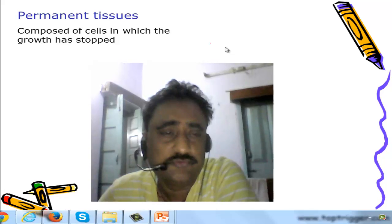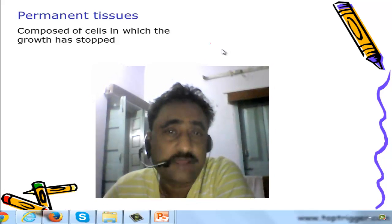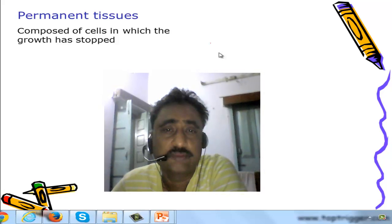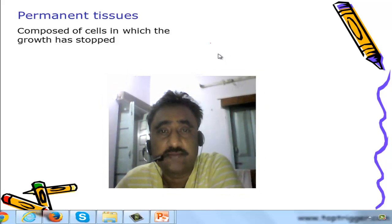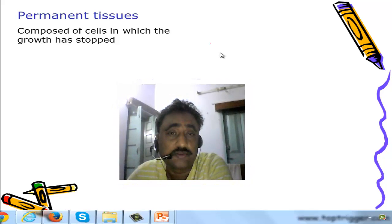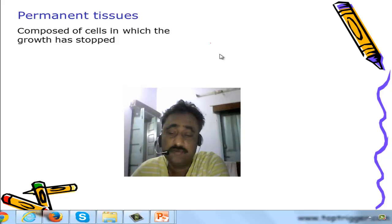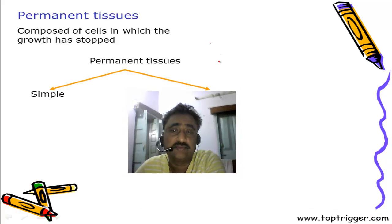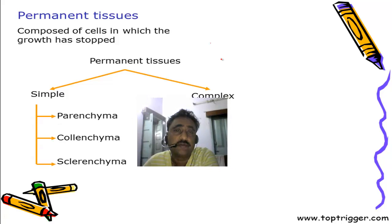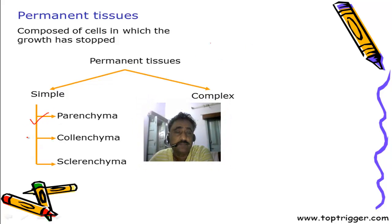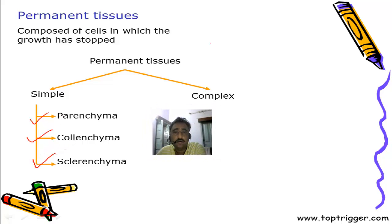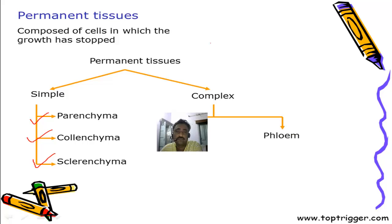Permanent tissues are those tissues in which cells don't have a capacity to divide. Cells have stopped their growth and eventually they develop into different types of permanent tissues. We can divide permanent tissues into two categories: one is the simple permanent tissues and second is the complex permanent tissues. Simple permanent tissues can be divided into parenchyma, colenchyma and sclerenchyma. Similarly, complex permanent tissues can be divided into xylem and phloem.